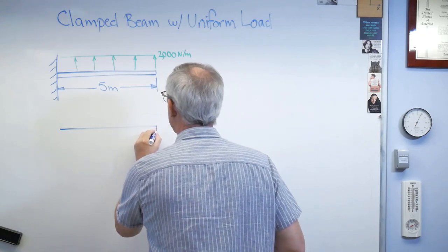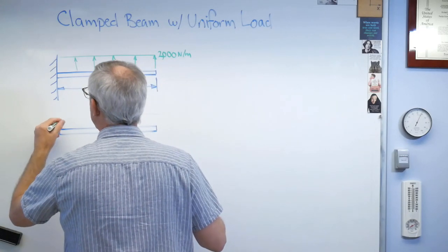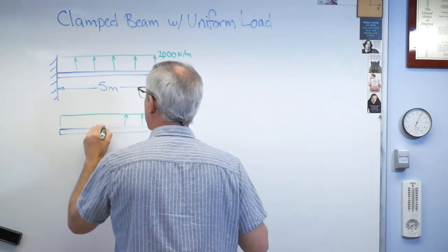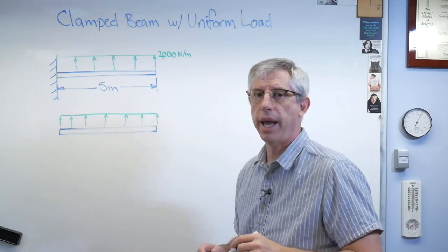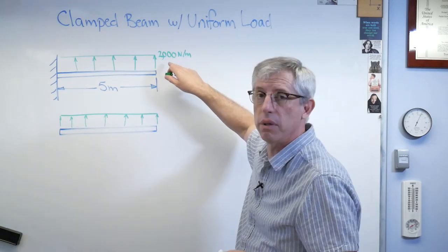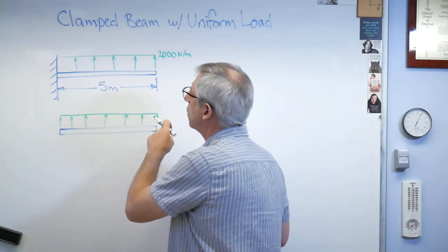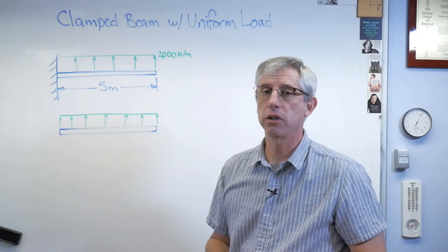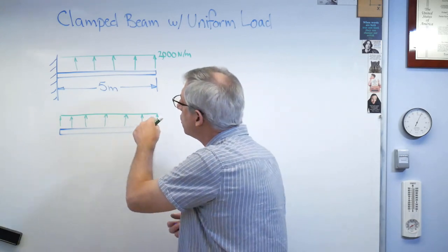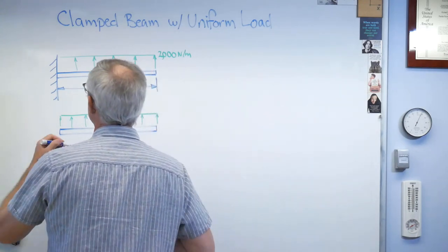Let's draw the free body diagram. I've got my uniform load upward drawn in green. One of my students the other day asked what I thought was a fairly insightful question: does the number of arrows correlate with the magnitude of the load? Well, not usually — there's a bunch of arrows across here and all that indicates is that you've got a distributed load. The number of arrows is probably just the choice of whoever's drawing it, so don't read too much into it. But it was a good question.